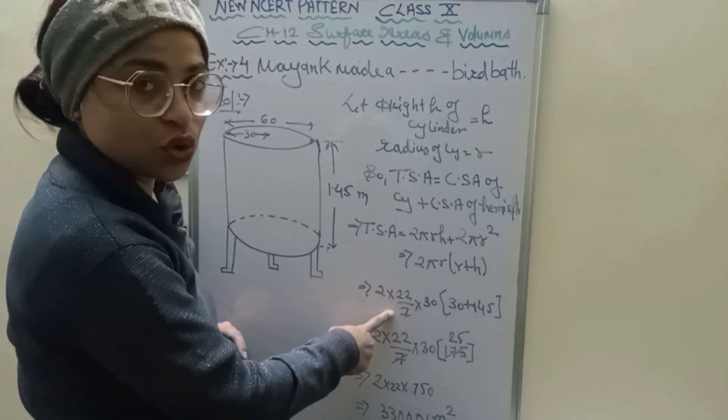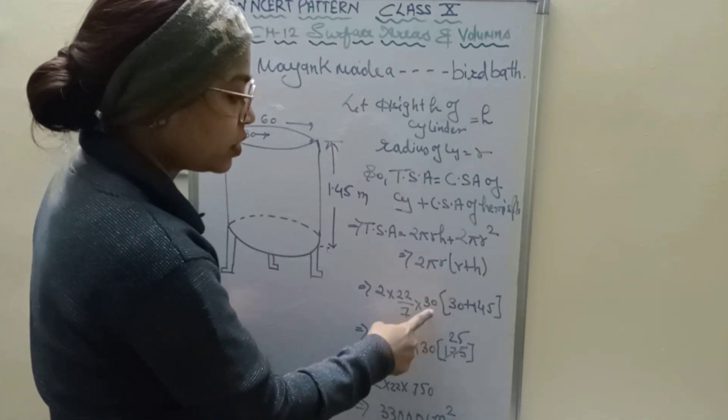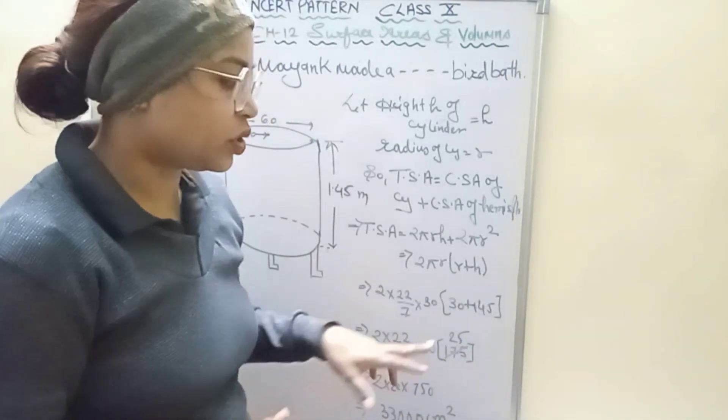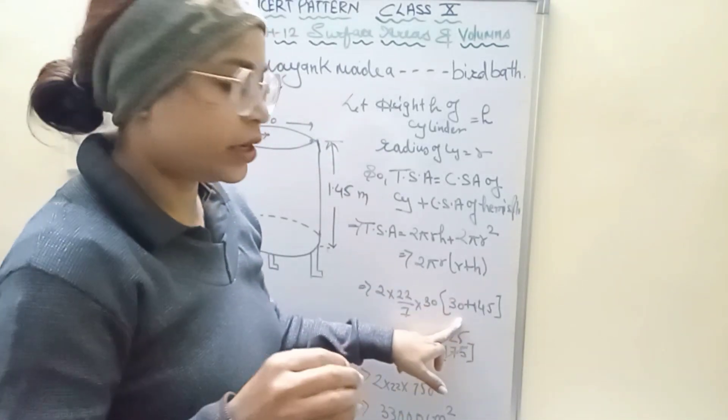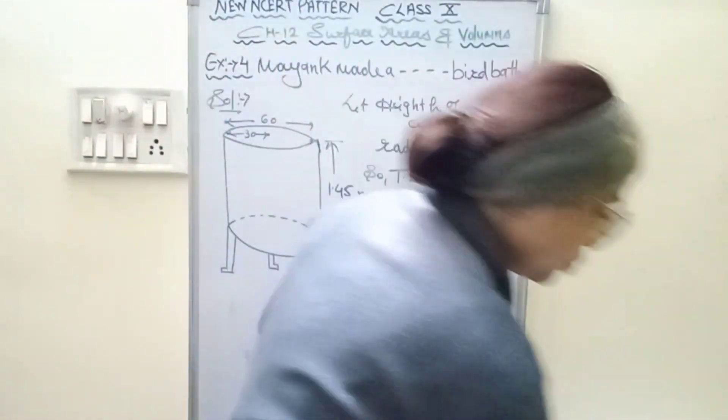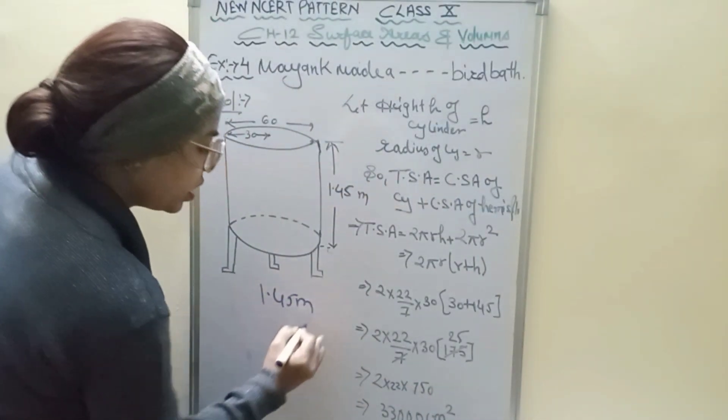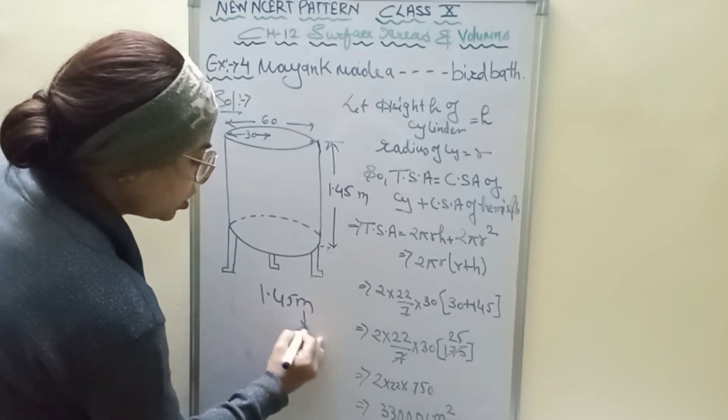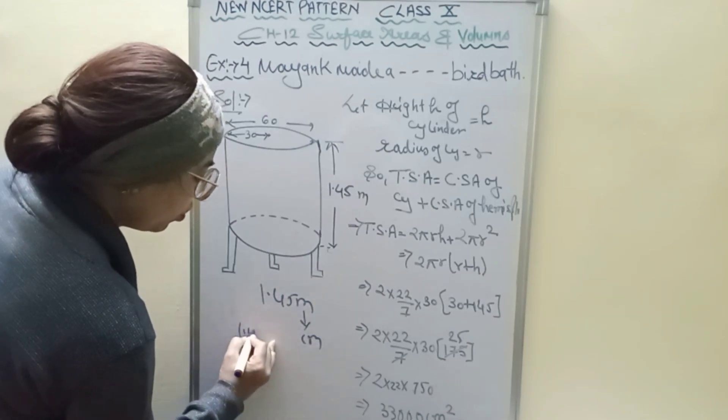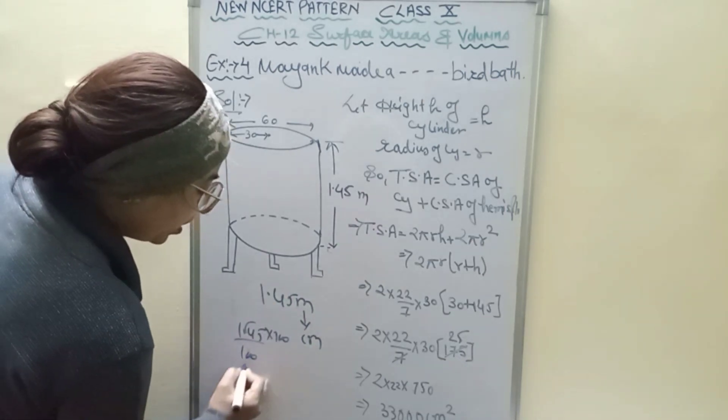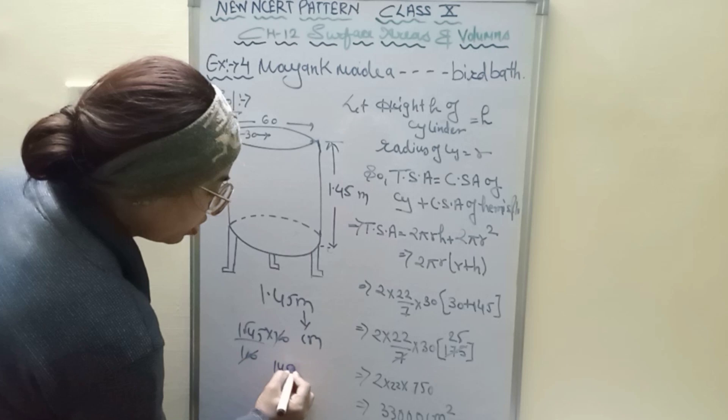So 2 as it is, and 22/7 is the value of π, and r equals 30 for the radius. In the bracket, the value is 30 for radius and 145 for height. In the question, 1.45 meters is given, so converting to centimeters: 1.45 × 100 equals 145 centimeters.